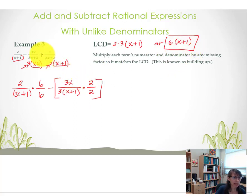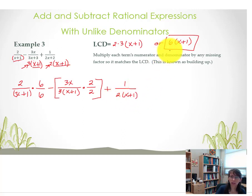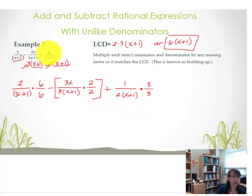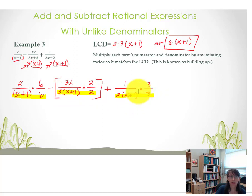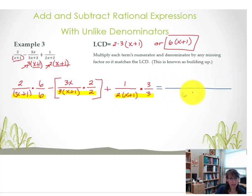Last we've got a plus sign, so no worries there. We're starting with 1 over 2 times quantity x plus 1. This denominator does not match the LCD — it's missing a factor of 3, so we use 3 to build it up. Now all three denominators should be 6 times quantity x plus 1, and sure enough they are. So we have built up everything correctly, giving us 6 times the quantity of x plus 1 in our denominator.